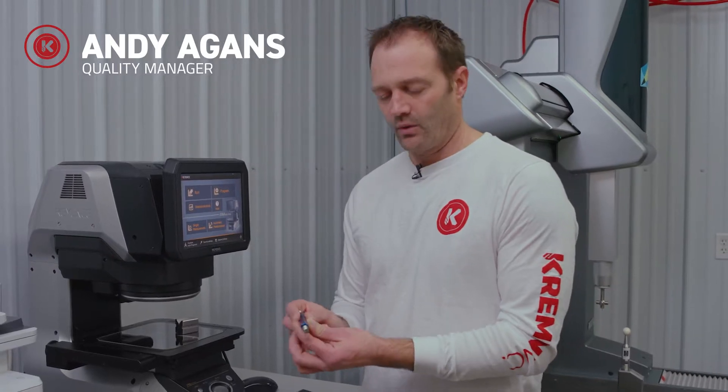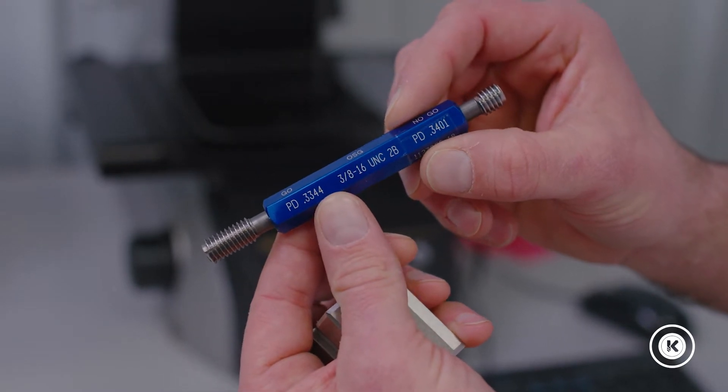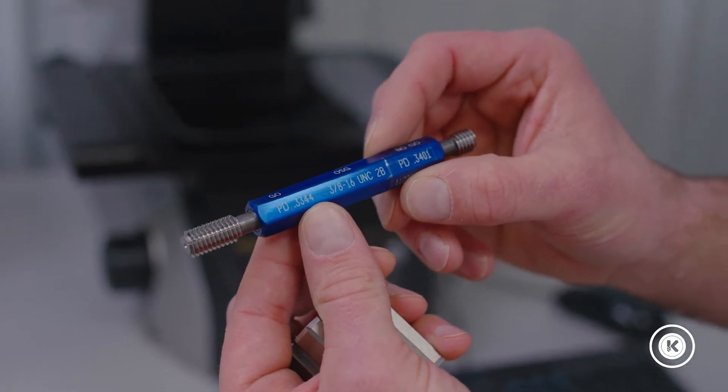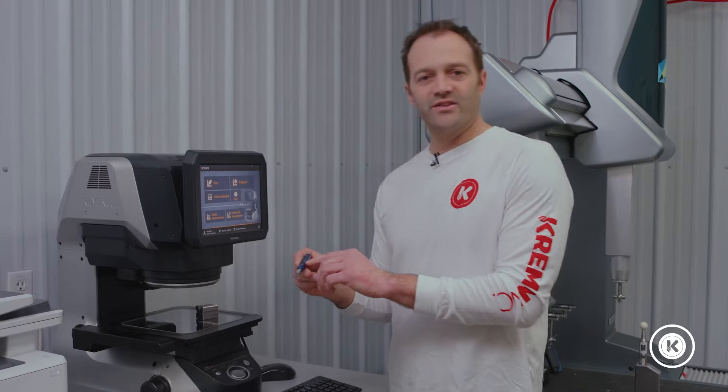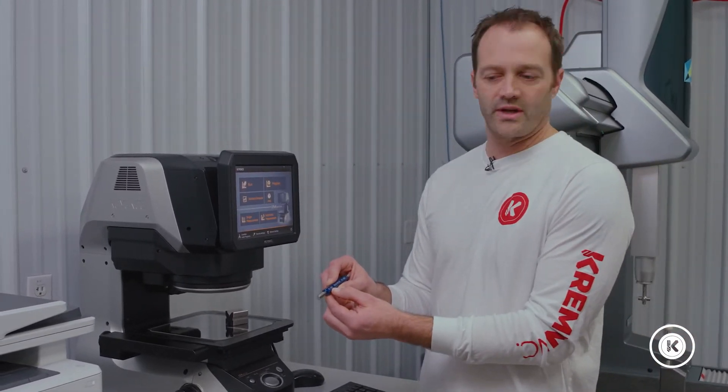What we have for you today is a common thread gauge. What we want to do is verify the pitch diameter is correct so that this gauge is not worn and can be used functionally to check a part. We have here a 3816 plug gauge. We want to verify the go size pitch diameter.